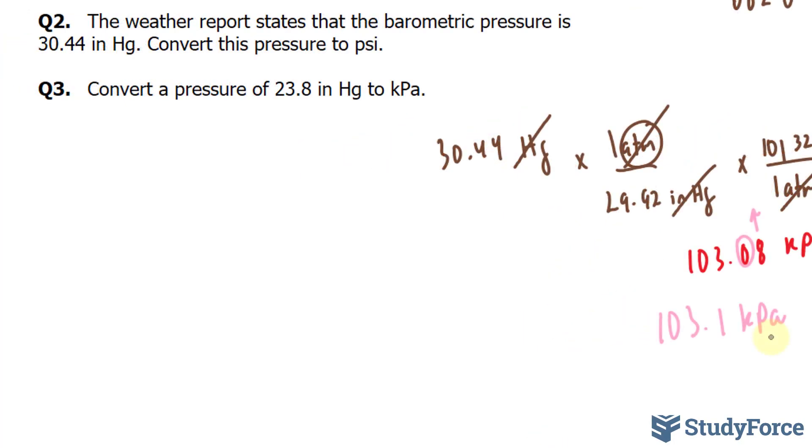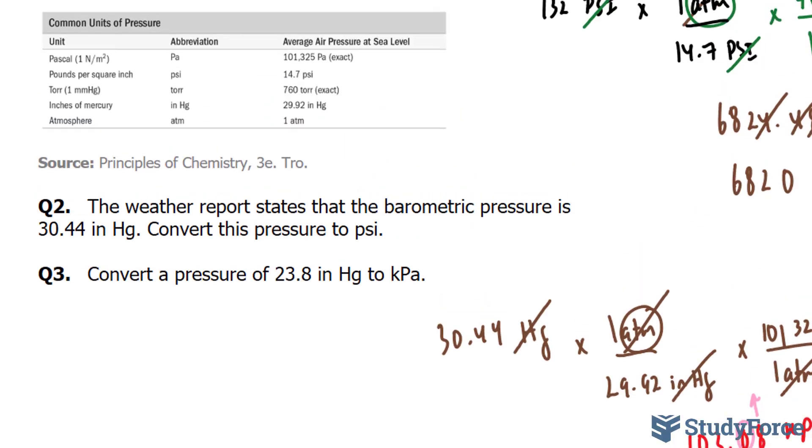Finally, in question 3, they want us to convert a pressure of 23.8 inches of mercury to kPa. This is the exact same request as in question 2, so I'll do it really quickly for you. And what I would suggest is that you pause the video and see if you can do it by yourself.